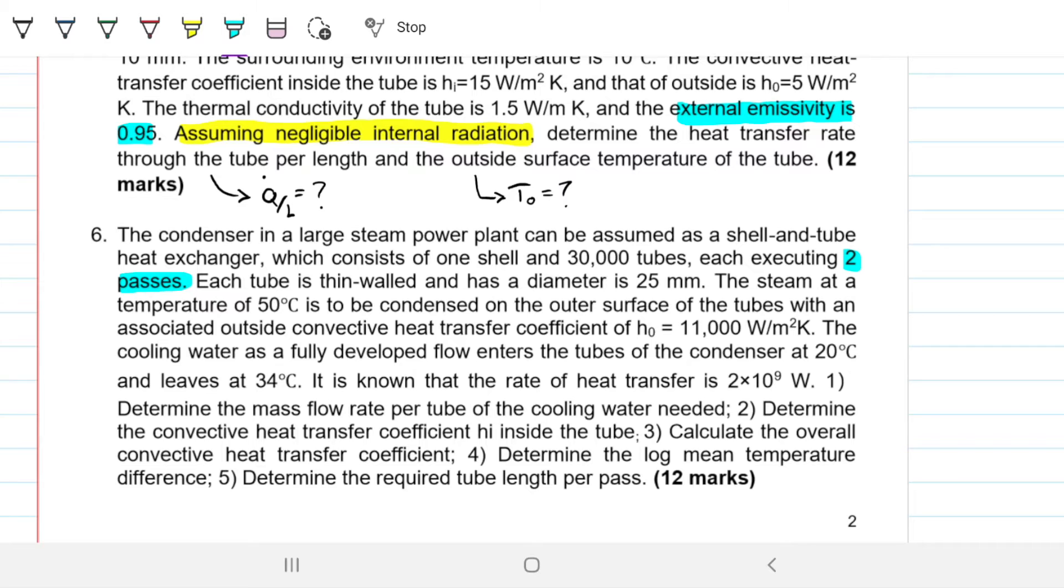The cooling water, as a fully developed flow, enters the tubes of the condenser at 20 degrees Celsius and leaves at 34 degrees Celsius. It is known that the rate of heat transfer is 2 times 10 to the 9 watts. 1. Determine the mass flow rate per tube of the cooling water needed. 2. Determine the convective heat transfer coefficient, HI, inside the tube. 3. Calculate the overall convective heat transfer coefficient. 4. Determine the log-mean temperature difference. And 5. Determine the required tube length per pass.